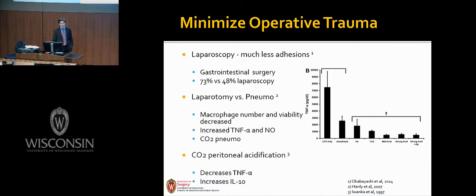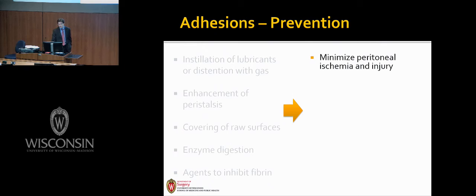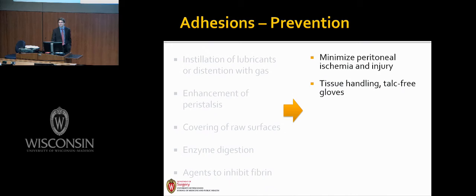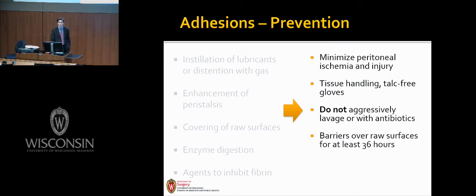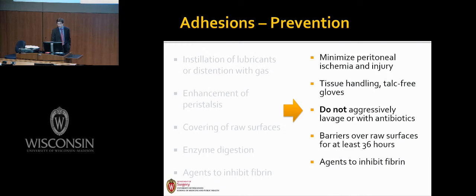In reality, preventing adhesions comes down to minimizing our impact on the peritoneal environment and the injury we cause. It's safe tissue handling techniques, talc-free gloves, not aggressively lavaging or using antibiotic lavage. It's using barrier methods to cover raw surfaces for at least that 36-hour window to prevent adhesion formation. Perhaps using agents to inhibit fibrin and preserving the omentum.